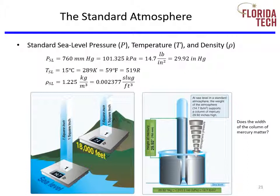An aerospace or flight test engineer should really memorize the standard sea level values for pressure, temperature, and density. If you had a column of air measuring one inch by one inch rising all the way to outer space and put it on a scale at sea level, it would read 14.7 pounds. On a mountain at 18,000 feet, it would read half that, or 7.4 pounds. Half of the atmosphere's mass is in the first 18,000 feet — about 3.4 miles — while the other half is spread over the next 300-plus miles.